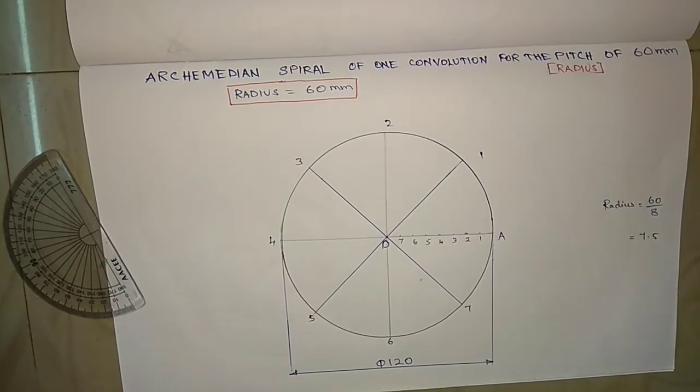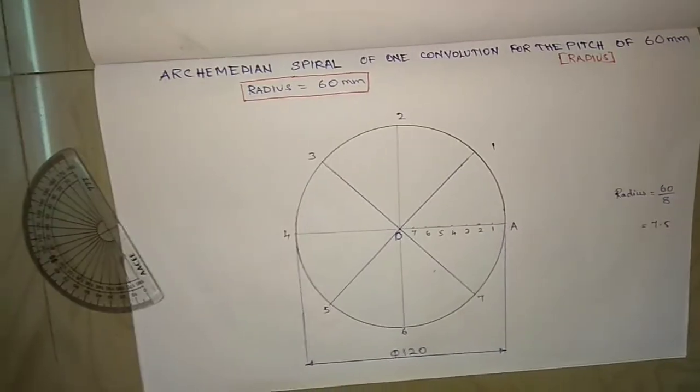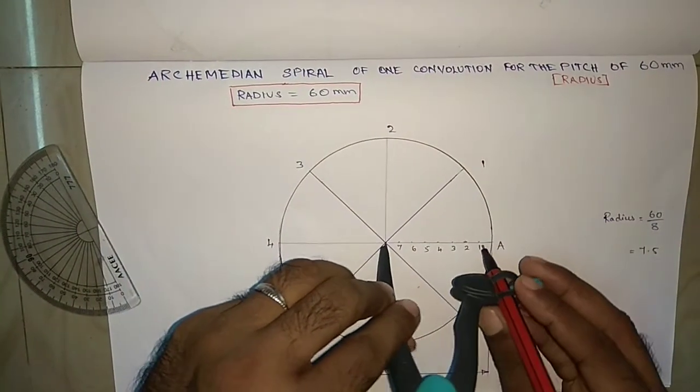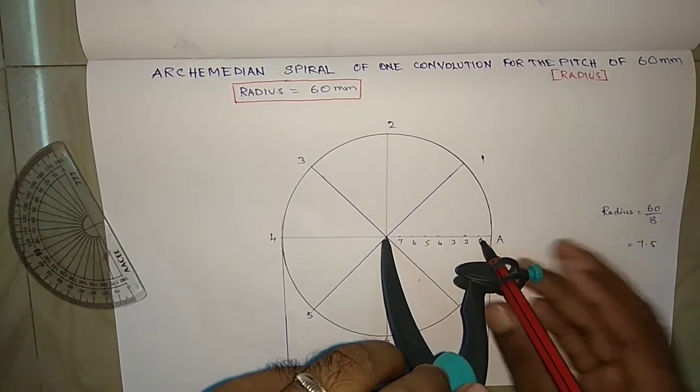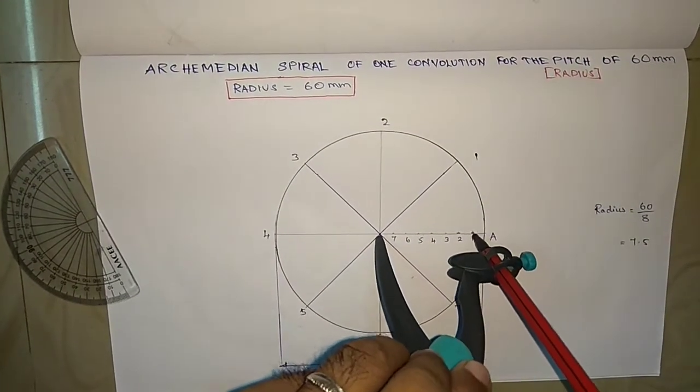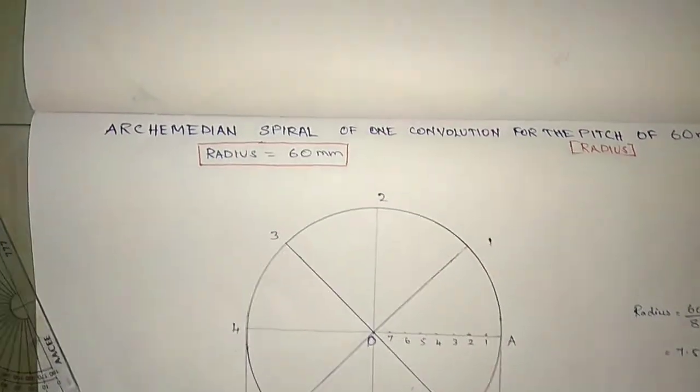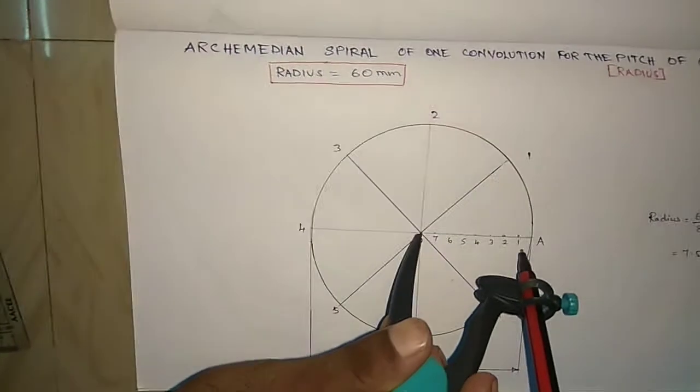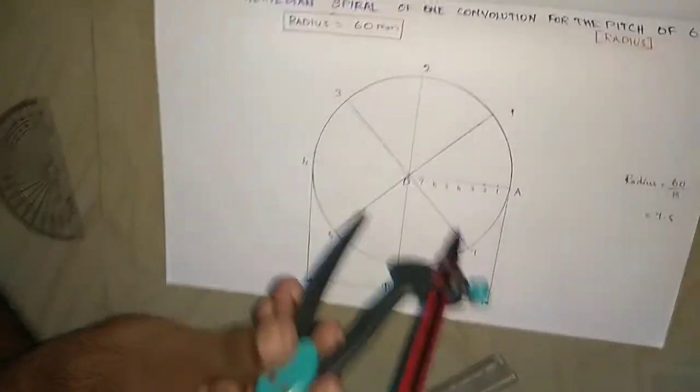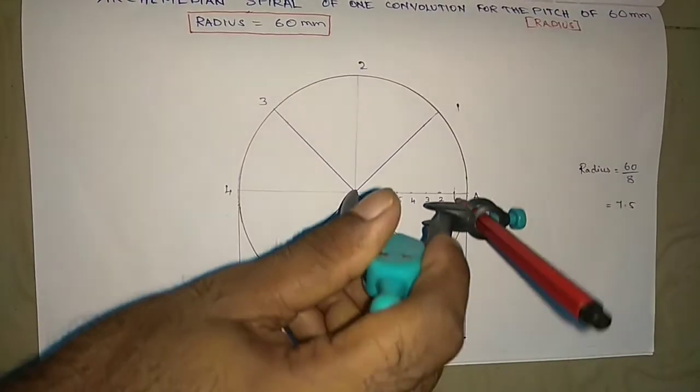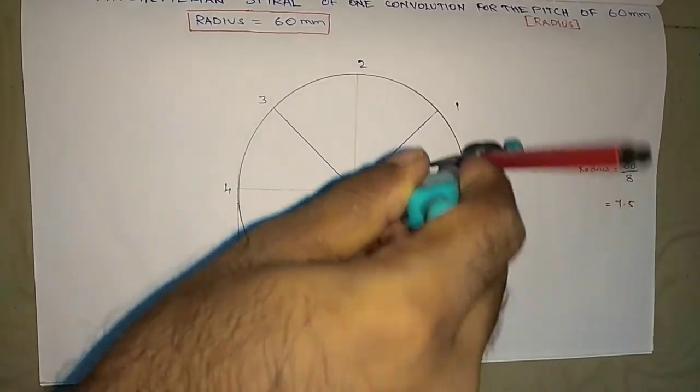Then use the compass from the center to the first point, measure the value. Then draw an arc up to the first line. So center to 1 as a radius value, we are going to draw an arc up to the first line.